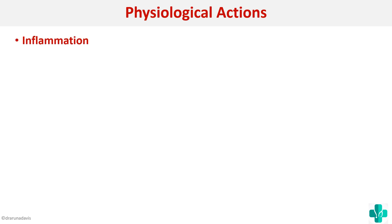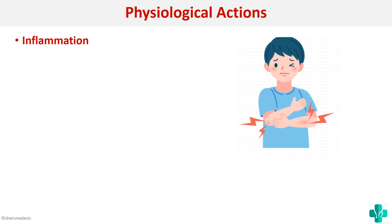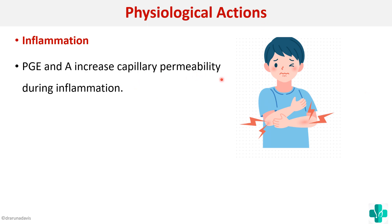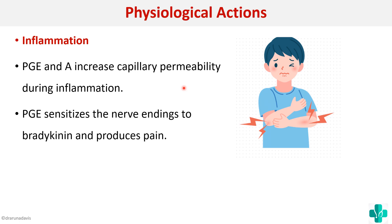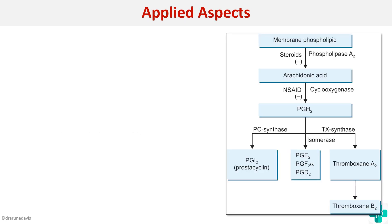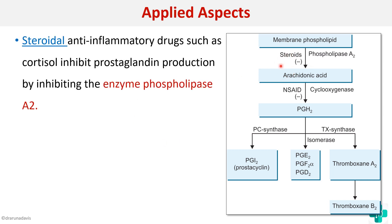Next we will see the role in inflammation. Prostaglandins play a very important role in inflammation because they can increase capillary permeability. PGE and PGA can increase capillary permeability due to inflammation, and moreover they can sensitize nerve endings to bradykinin and produce pain. Prostaglandin is a main culprit behind pain and inflammation. Steroids can inhibit prostaglandin formation by inhibiting the enzyme phospholipase A2, and that is how steroids are used as anti-inflammatory drugs.